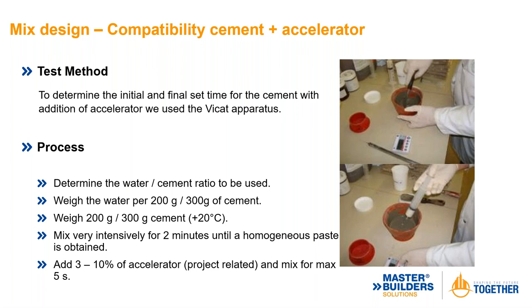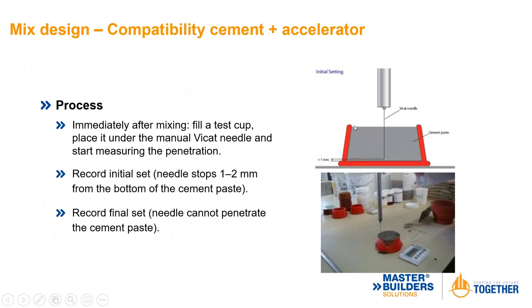Mixing more than five seconds breaks down the chemical reaction between accelerator and cement. After mixing, fill a test cup, place it under the manual Vicat needle, and measure penetration. The needle needs to stop 1 to 2 mm from the bottom of the cement paste for initial and final set — it should not penetrate the cement paste. This indicates your cement and accelerator are working together. There are different chemistries in both cements and accelerators, and you want to make sure they're compatible.